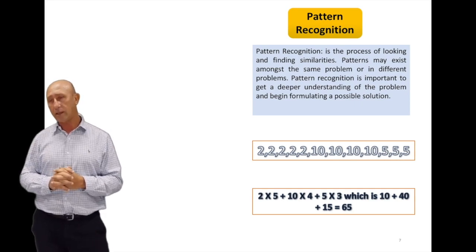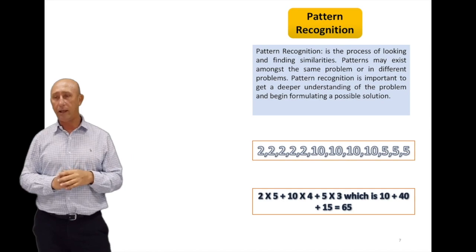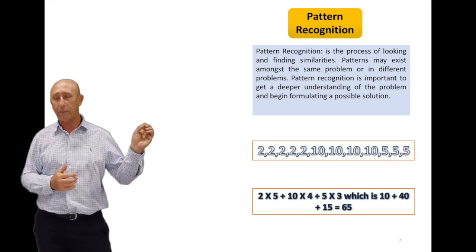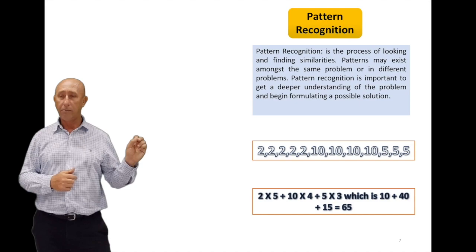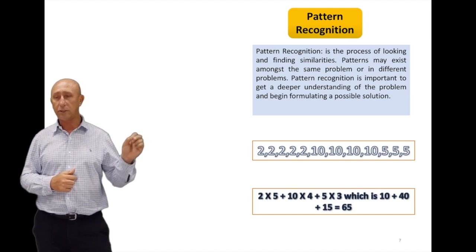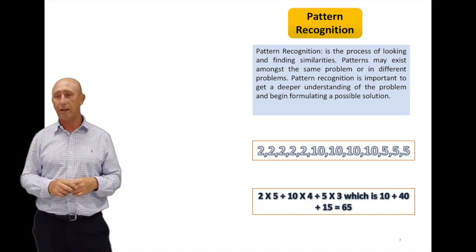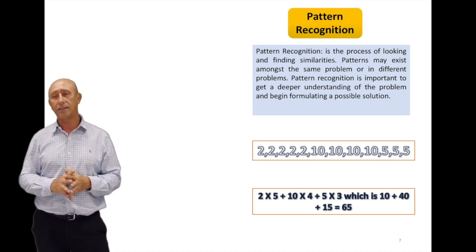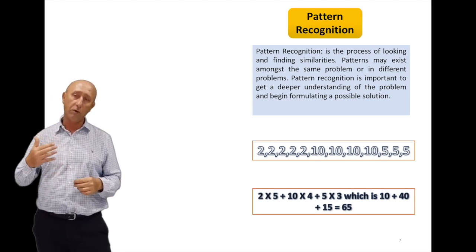For example, if I look at this, I notice that there are 5 2s, there are 4 10s, and 3 5s. So the solution: I can take the number of repetitions, the pattern, and multiply it by the number itself. So 2 times 5 becomes 10, 4 times 10 becomes 40, and then 3 times 5 becomes 15. And the answer is 65. So that is a simple example, but you will see more of these as we go along in this course.